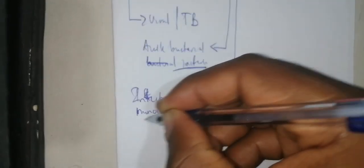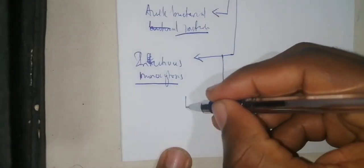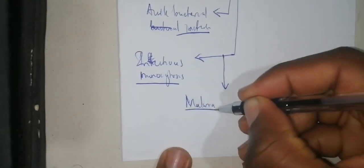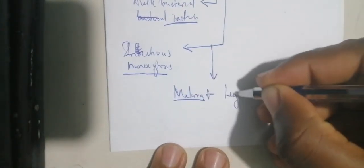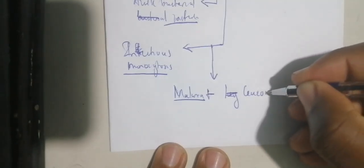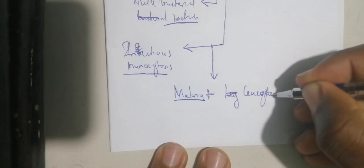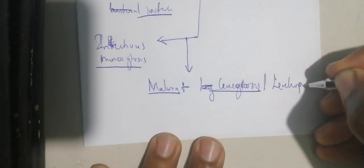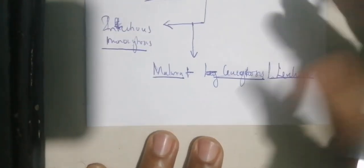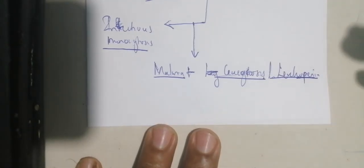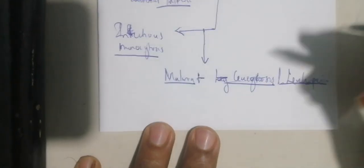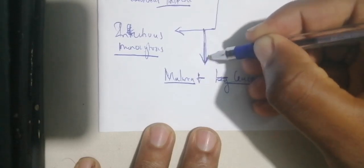Monocytosis is going to be elevated in a case of infectious monocytosis. You can also have malaria with a high level of monocytes, but malaria does not present with leukocytosis. Malaria instead has a leukopenia.